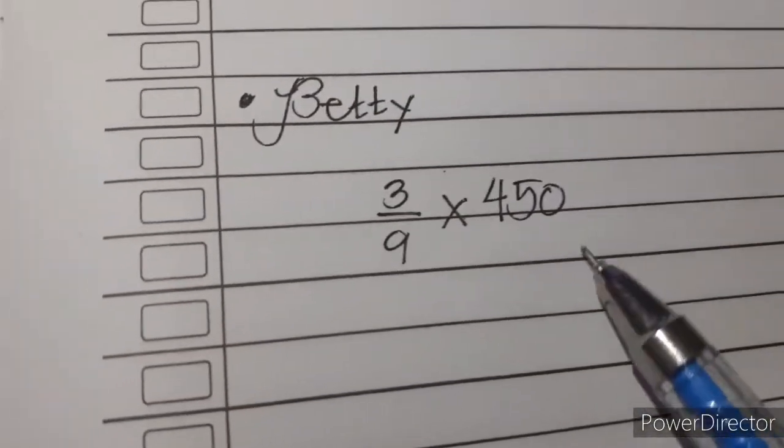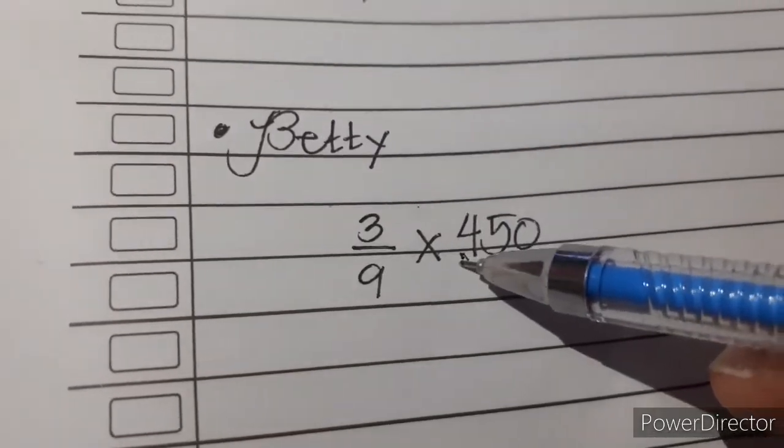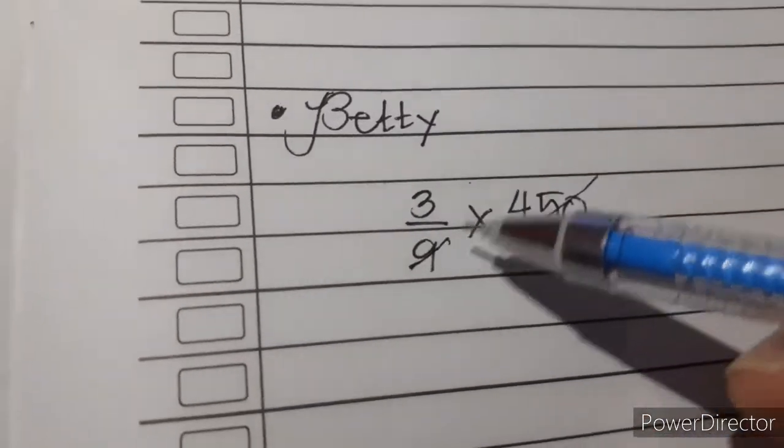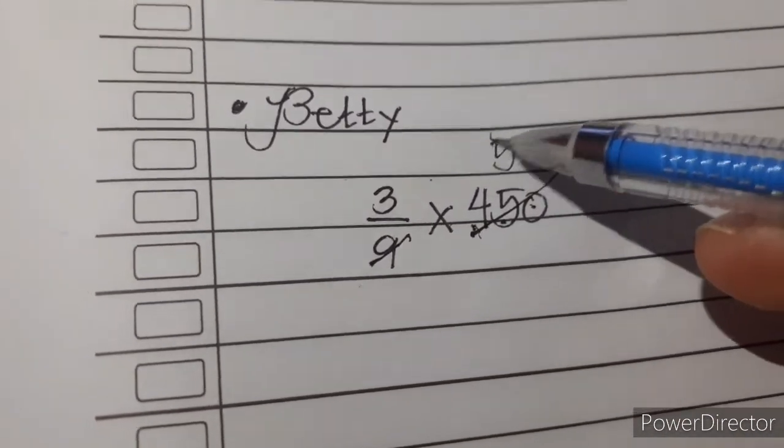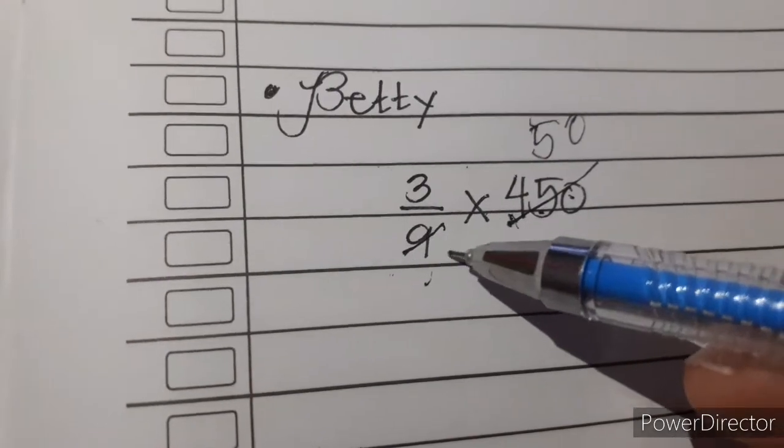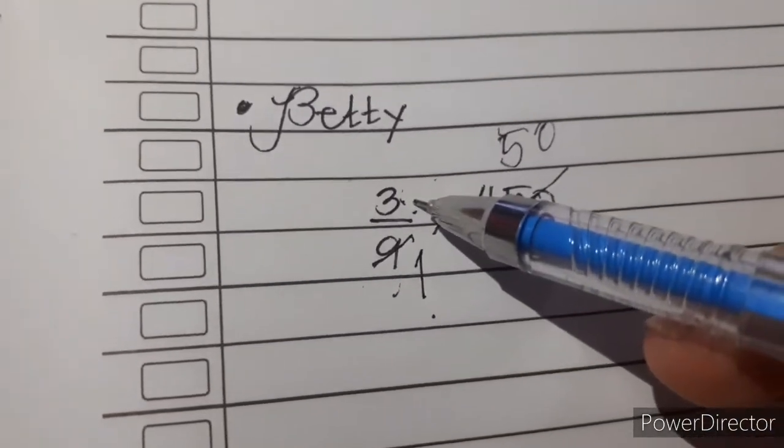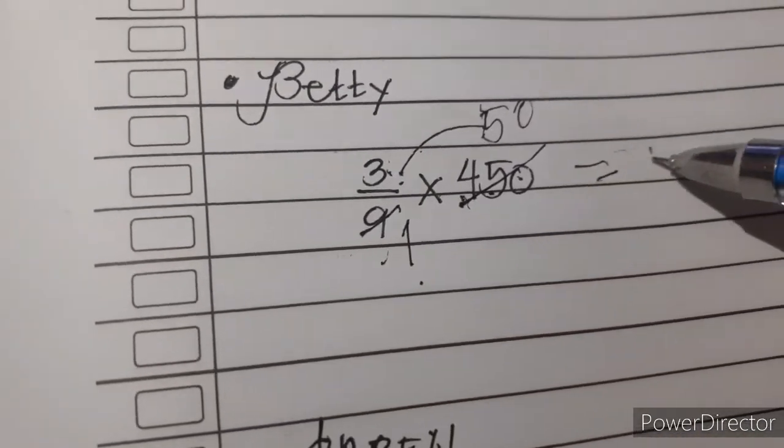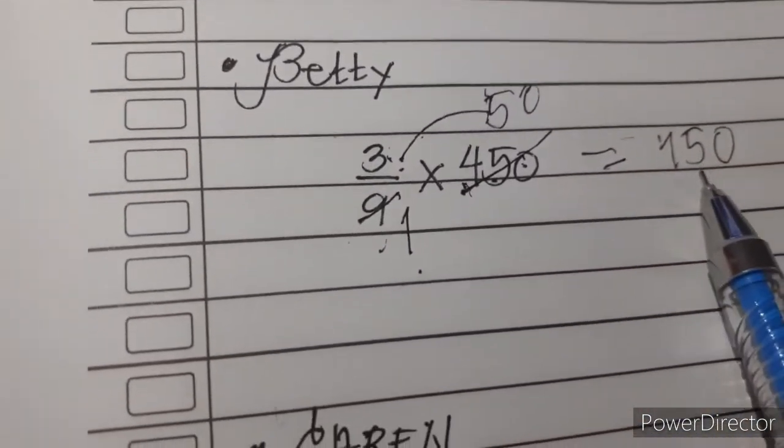Next, Betty takes 3/9 of $450. Again, let's divide by 9 because both are divisible by 9. $450 divided by 9 is 50, and 9 divided by 9 is 1. 3 over 1 means 3 whole, so we simply multiply 3 times 50, which equals $150. Betty's allowance is $150.